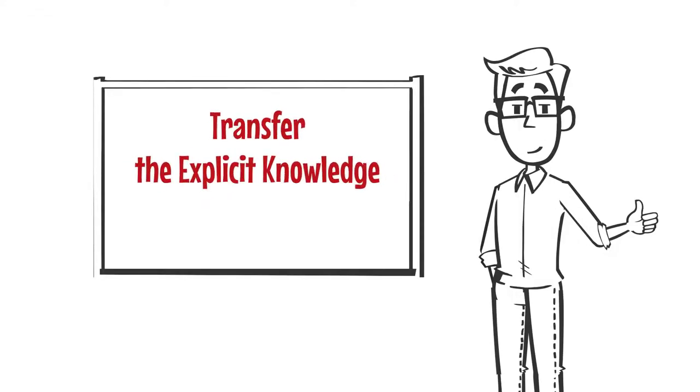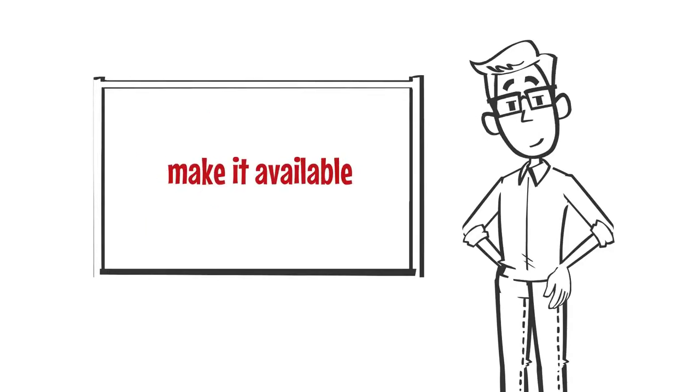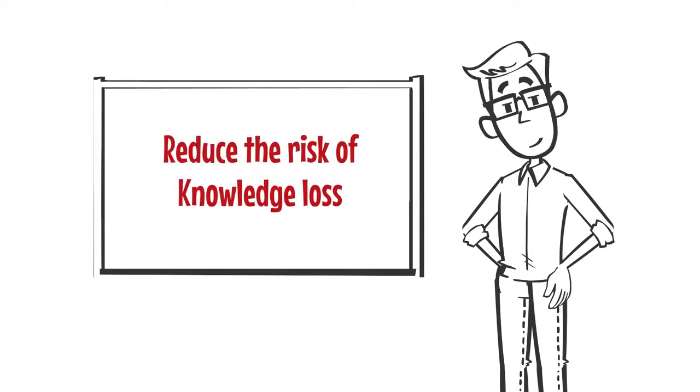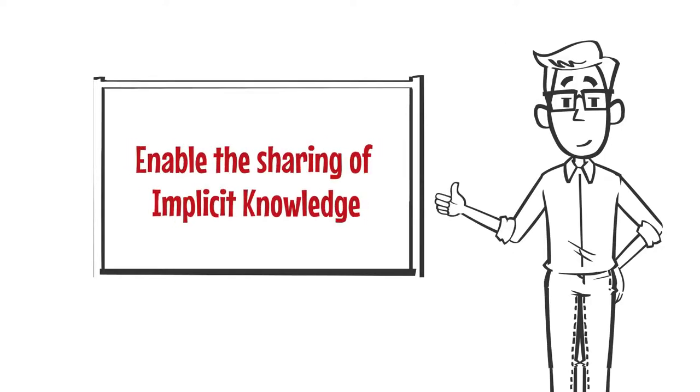One goal of knowledge management can be to transfer explicit knowledge, which is still in people's heads, into documentation, in order to make it more widely available in the organization, and reduce the risk of knowledge loss due to employees leaving. However, knowledge management should not be limited to explicit knowledge, but should also take measures beyond the documentation of knowledge in order to enable the direct sharing of implicit knowledge.